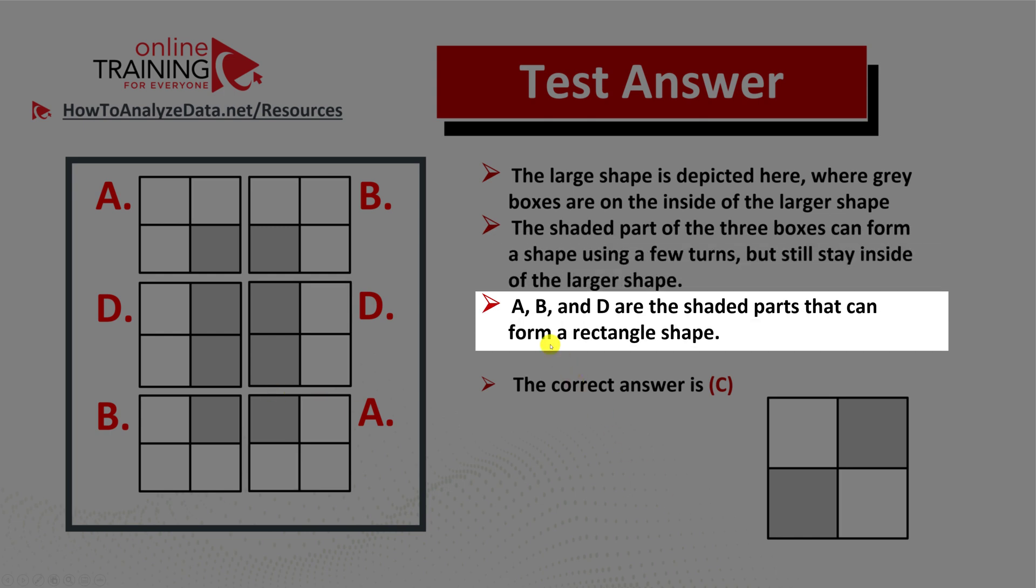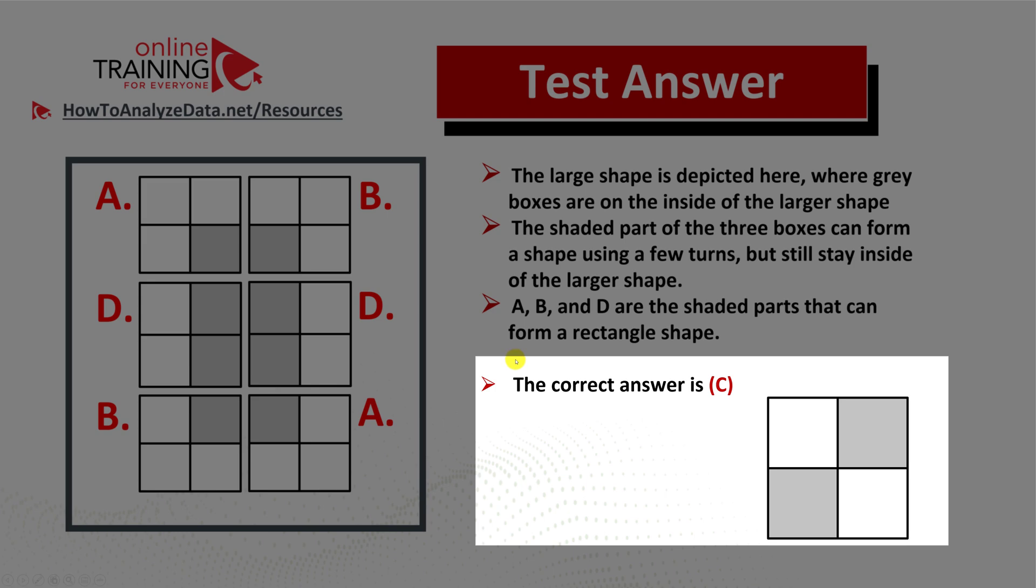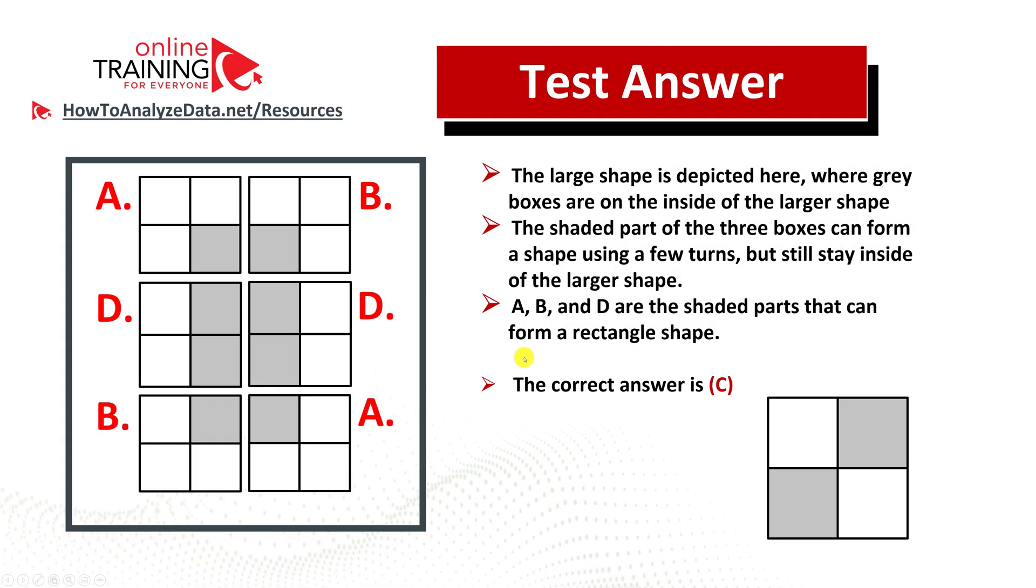This is why choices A, B, and D are valid choices, and choice C is the correct choice. This is the one you should be selecting. Hopefully you've nailed this question and answered it correctly.